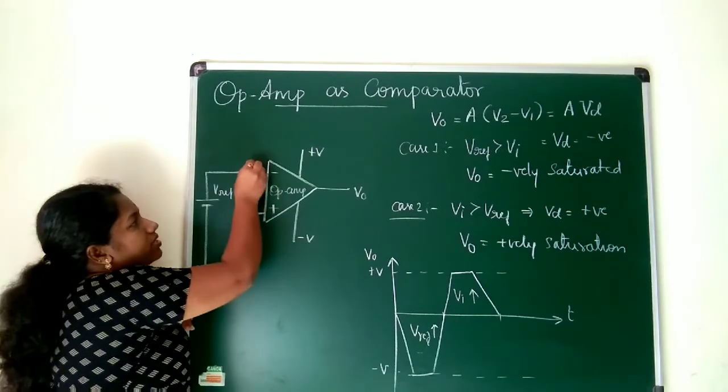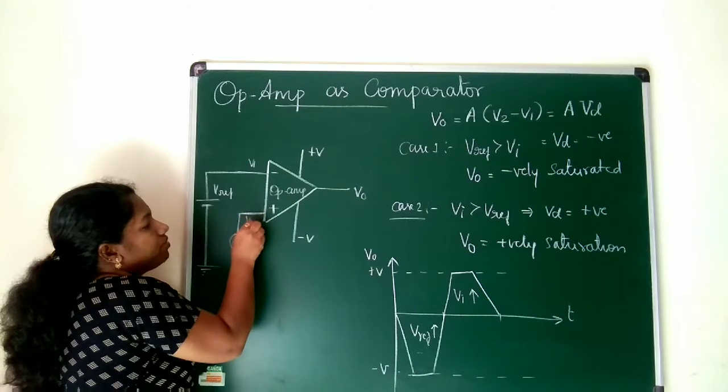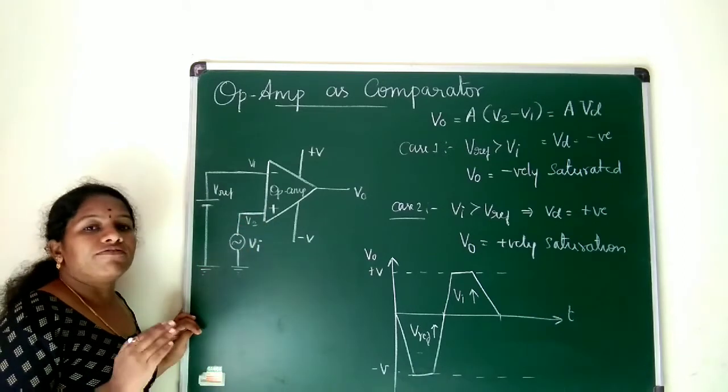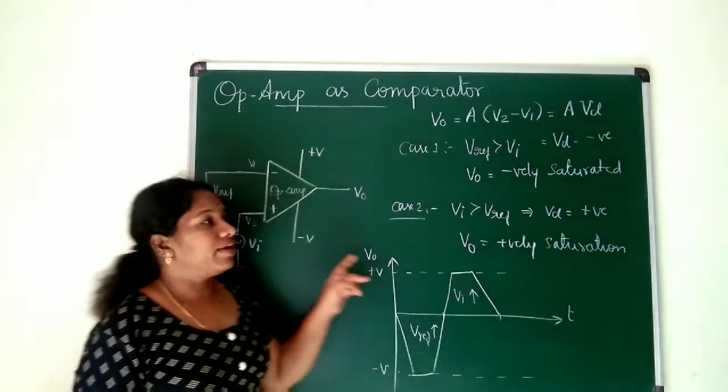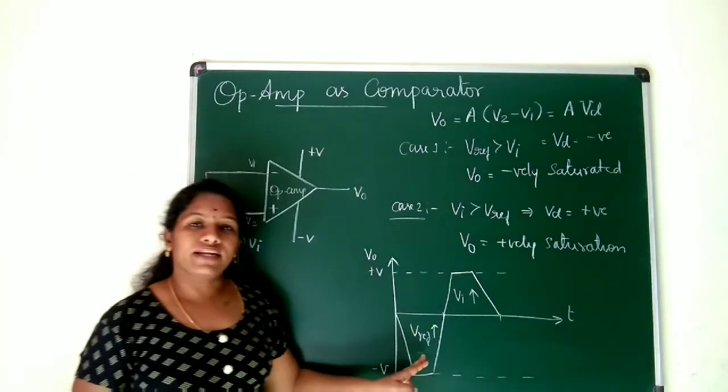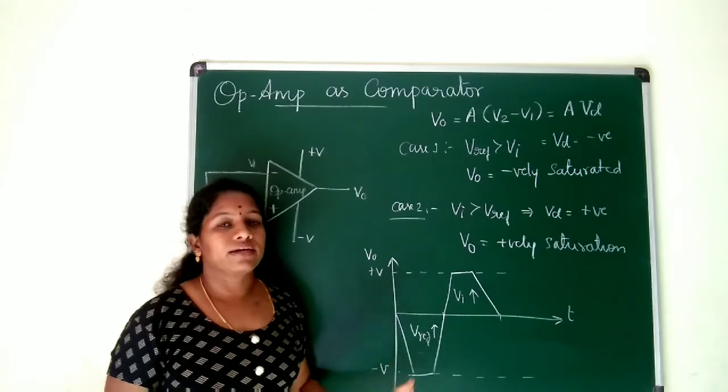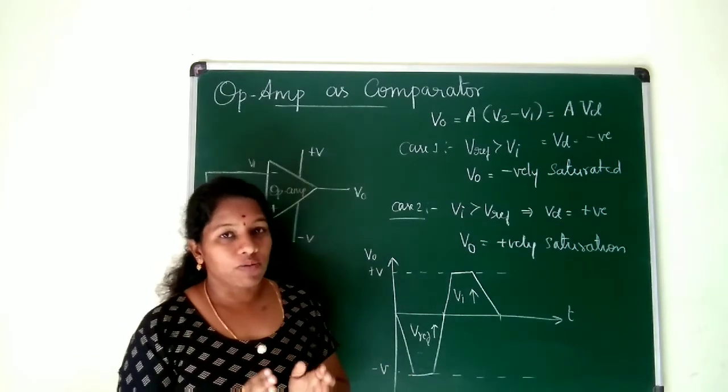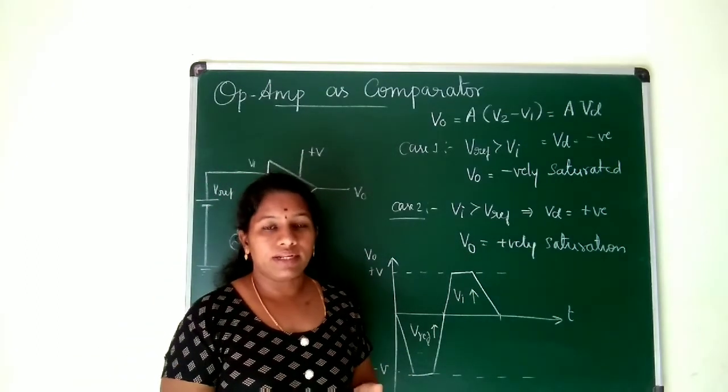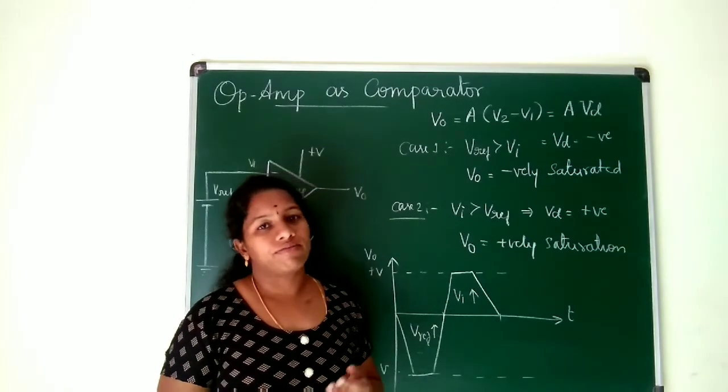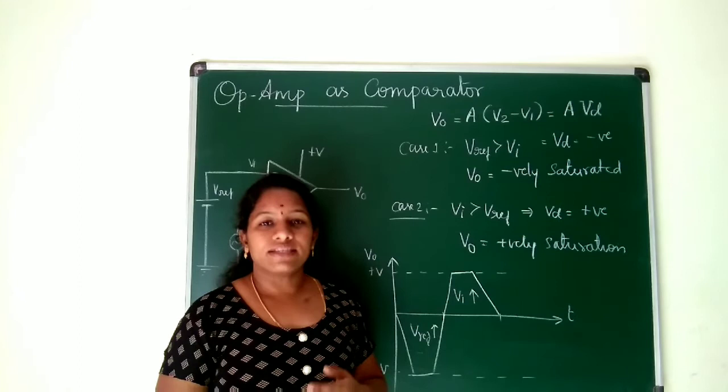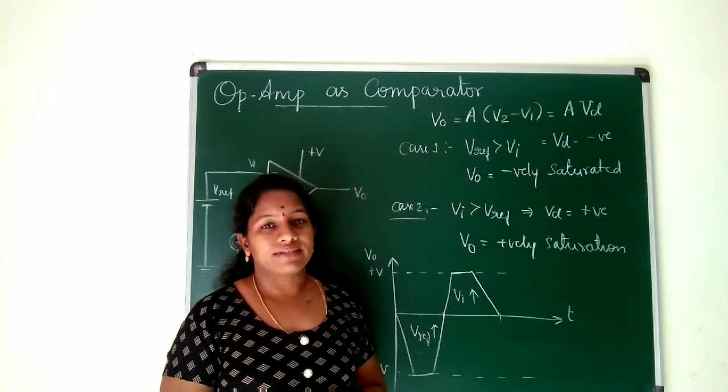And then I just name this as V1 and V2 for clarity. If V2 is greater what you will be getting? You will be getting positive cycle. When V1 is greater you will be getting negative cycle. So that if I just observe output voltage at the output terminal, I can conclude that whether V2 is greater or V1 is greater. In this way I can use op-amp as a comparator.